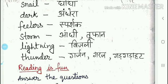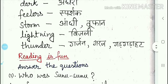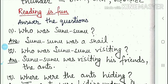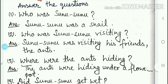Now we will come to the next topic, that is 'Reading is Fun'. Here you have to answer these questions. The first question is: who was Sunu Sunu? Sunu Sunu kon tha? The answer is: Sunu Sunu was a snail. The second question is: who was Sunu Sunu visiting? Sunu Sunu kin se milne ja raha tha?